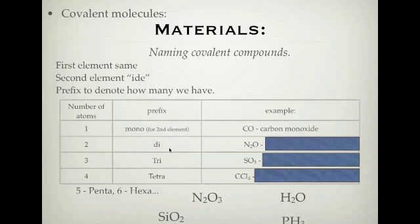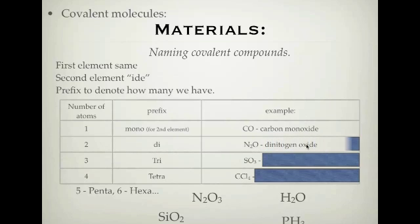Let's look at using 'di'. We have two nitrogens and one oxygen. The first element stays the same — we've got two of them, so it's dinitrogen. We have one of the second element which is oxygen, so it should be oxide. So what is it? Dinitrogen monoxide. Please write down dinitrogen monoxide — not dinitrogen oxide. It should be dinitrogen monoxide because we have one oxygen.